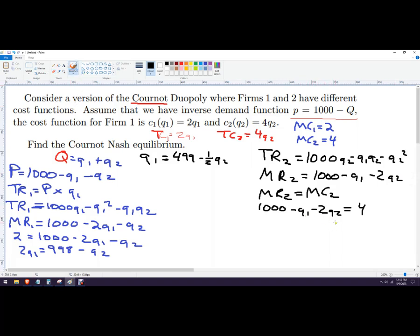And then now I've got 996 minus Q1 equals 2Q2. It should be subscripts down here. Divide back through by 2, and I've got Q2 is 498 minus 1 half Q1. And that's the best response function for the other firm.